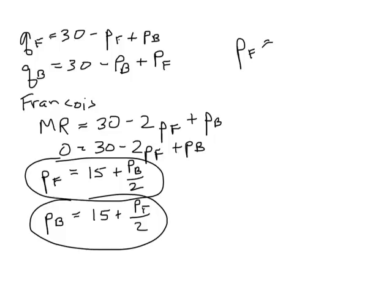So 15 plus one-half times 15 plus PF over 2. When I work that all out I get 15 plus 7.5 is 22.5 plus PF over 4.